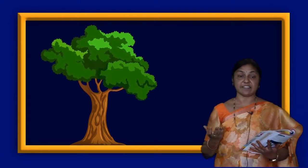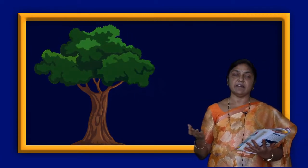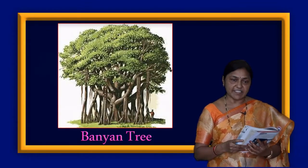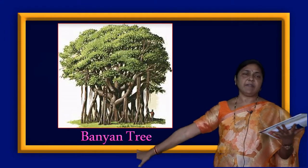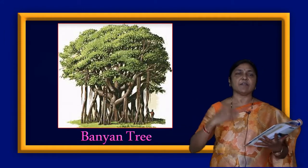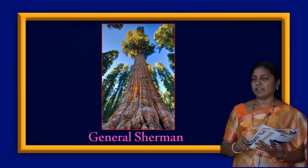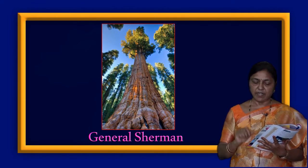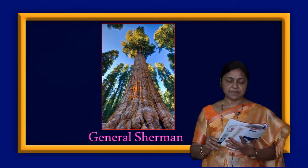We can see many trees in big forests. They can live years together. The banyan tree in our villages can spread over a large area and lives thousands of years. The same way, one tree in America is always very green — that is called General Sherman, in California.